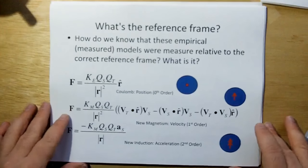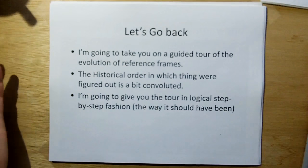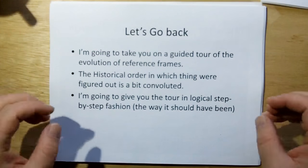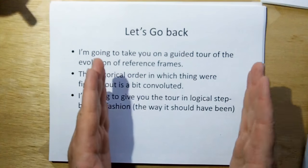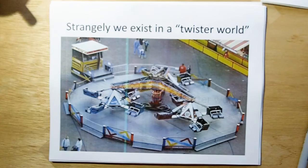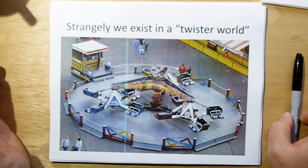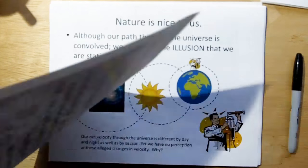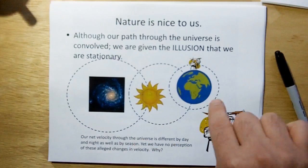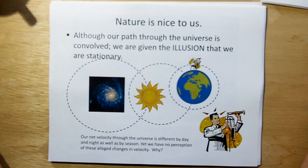Knowing what the useful reference frame is, is important to understanding how to compute everything. So what's the reference frame for new electromagnetism? I'm going to take you on a guided tour of the evolution of reference frames, in a logical step-by-step fashion. We live in a twister world — like an amusement park ride. We live on a rotating planet going around the sun, the sun going around the galaxy. Our net velocity through the universe is different day by day, by night, and by season, yet we have no perception of these alleged changes in velocity.